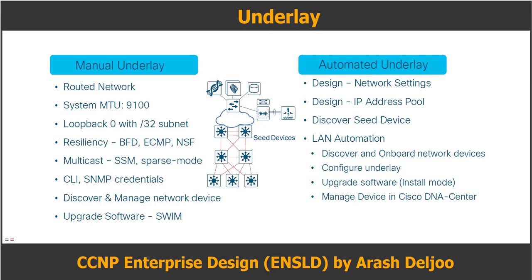Link-state routing protocols converge more quickly than distance vector routing protocols. They use areas and advertise information about the network topology instead of advertising the complete routing table, and use the SPF or Shortest Path First algorithm to find the shortest path to each node in the routing topology. Cisco DNA Center's LAN automation feature uses IS-IS, or Intermediate System to Intermediate System, routing protocol. However, OSPF can also be used with manual configuration.